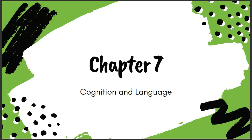Chapter seven. We're going to go over cognition and language — how we think, how we break things down into ideas and concepts, how we make decisions. We're also going to break down language and the development of language and how that occurs in our brains. So let's get into chapter seven.